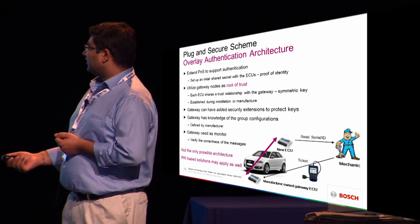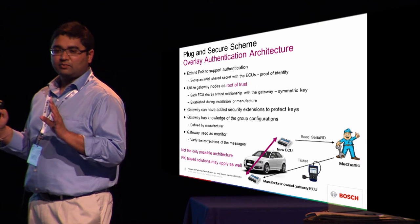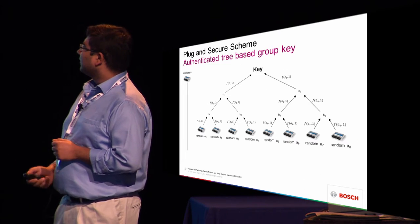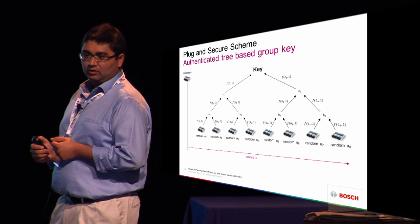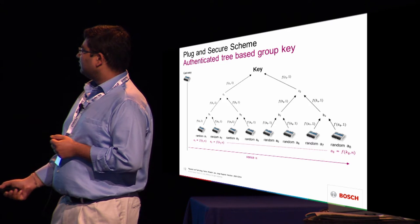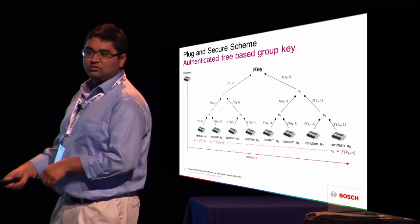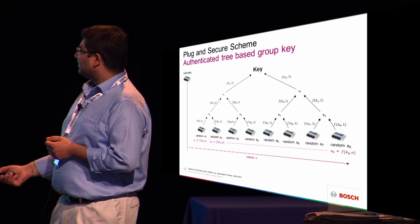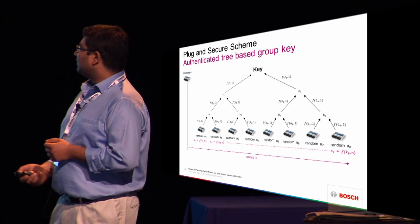The gateway is used as a monitor — it just monitors all the transmissions on the bus without doing active participation. That's actually sufficient to ensure authentication. If we take the tree-based scheme, the gateway would broadcast a nonce. These ECUs, instead of choosing random values, generate a tag on that nonce using the pre-shared key and use that as input to plug-in secure. Nothing else changes, but this gives the gateway the ability to verify every transmission on the bus. Because it's a broadcast medium, we're not changing anything — we get this for free.